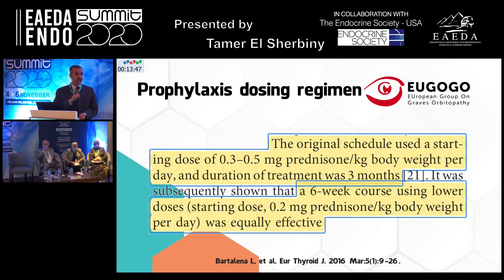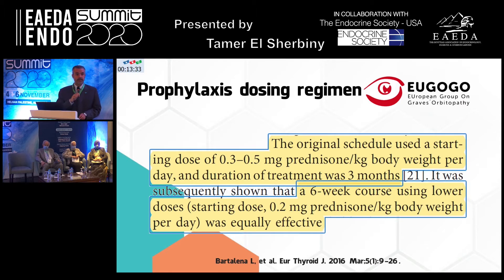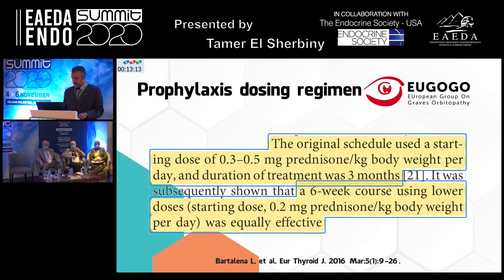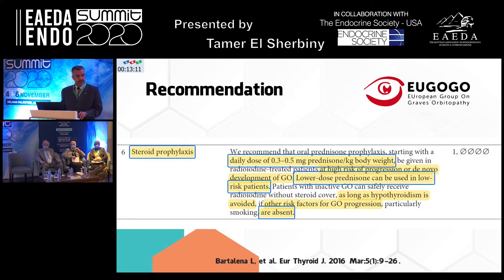We have two regimens for prophylaxis. The original high-dose regimen is 0.3 to 0.5 milligrams of prednisone per kg per day for three months. A later study introduced a lower dose of only 0.2 milligrams per kg per day for only six weeks, and it gave the same result. So you are free to give either the high-dose or the low-dose regimen. This recommendation carries a high level of evidence — recommendation grade 1.